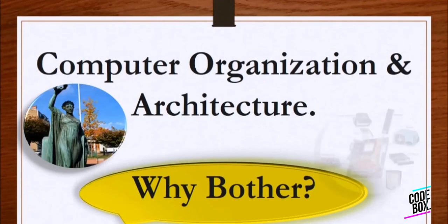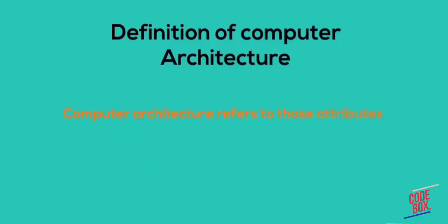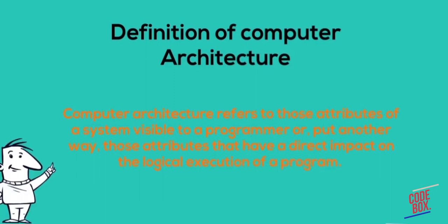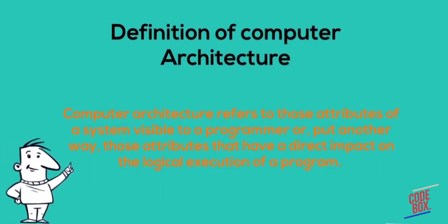This is the first phase of Computer Architecture. The second phase is Computer Organization. Computer Organization refers to the attributes of a system visible to a programmer.